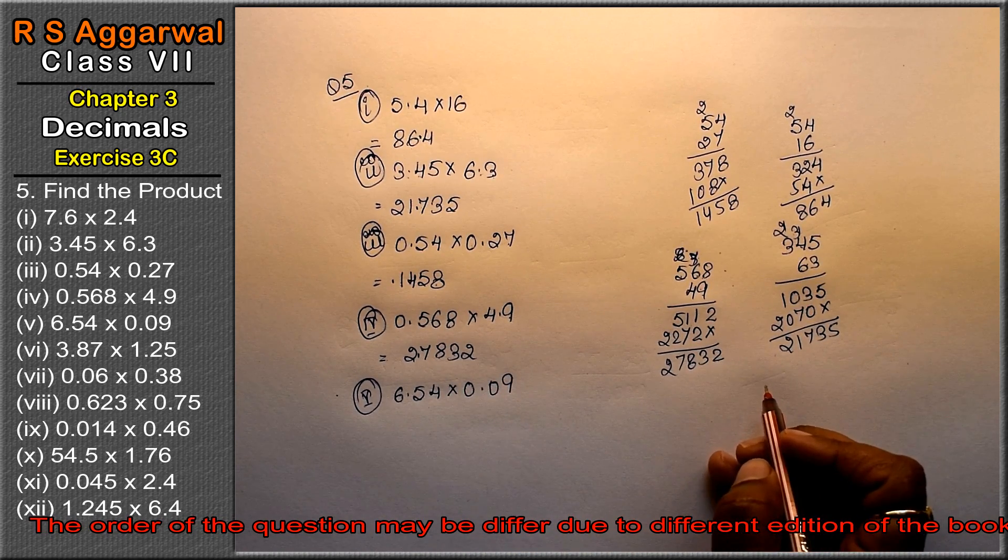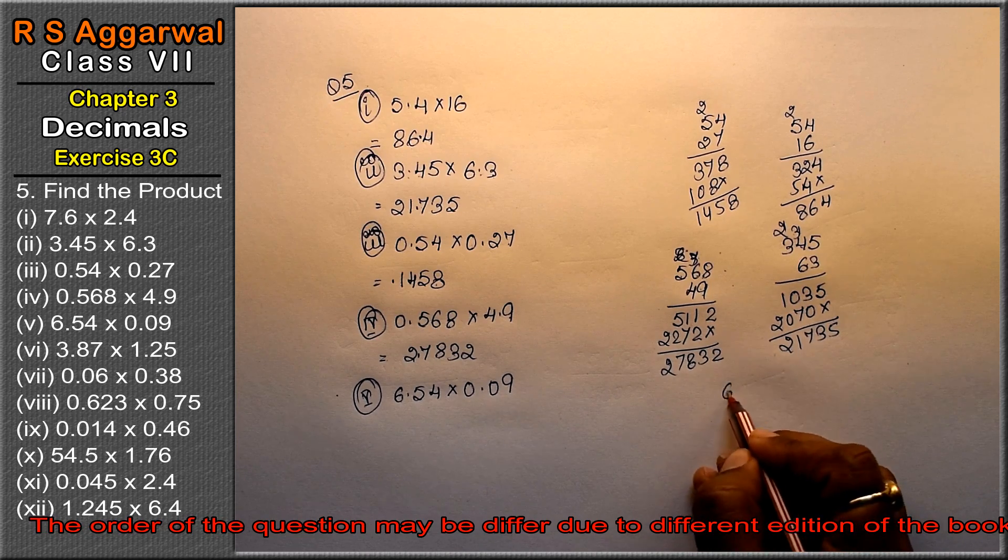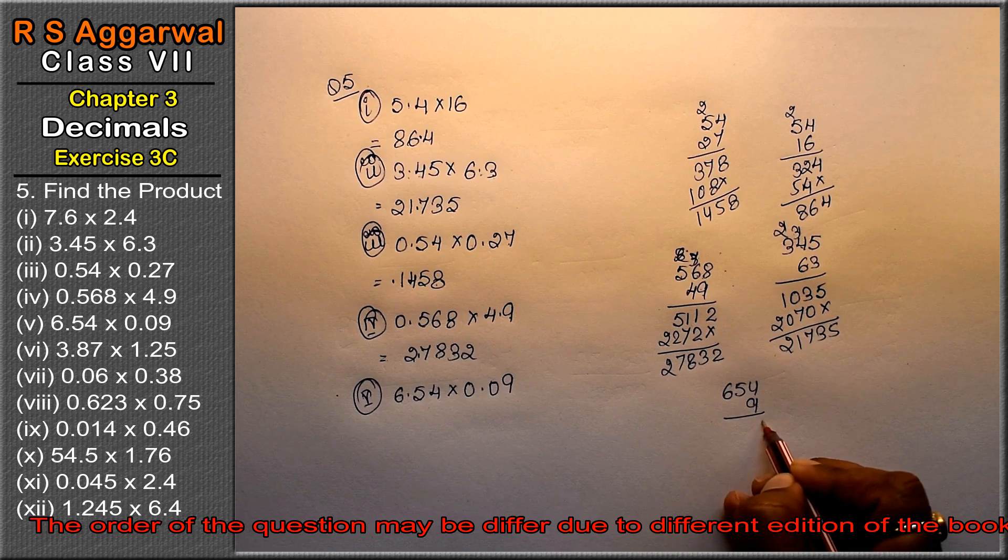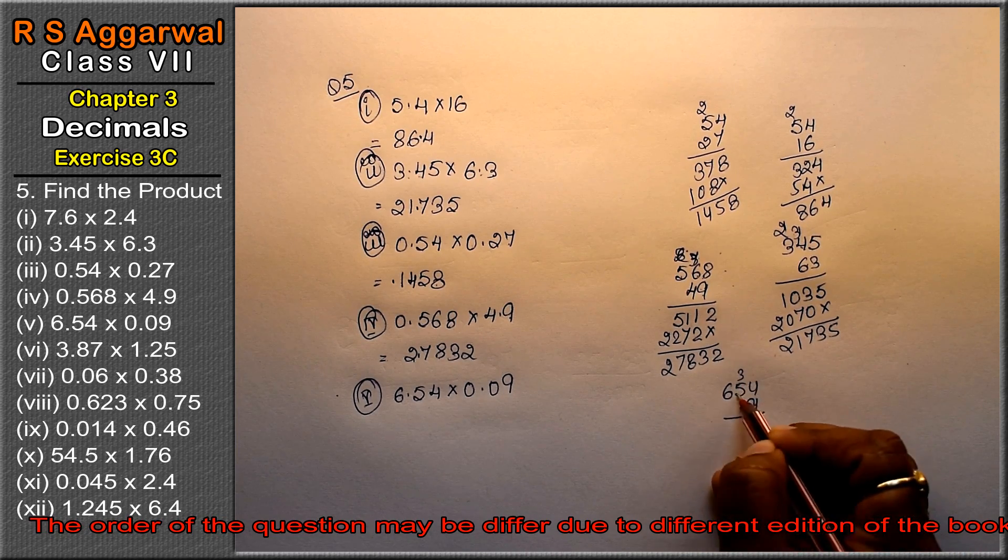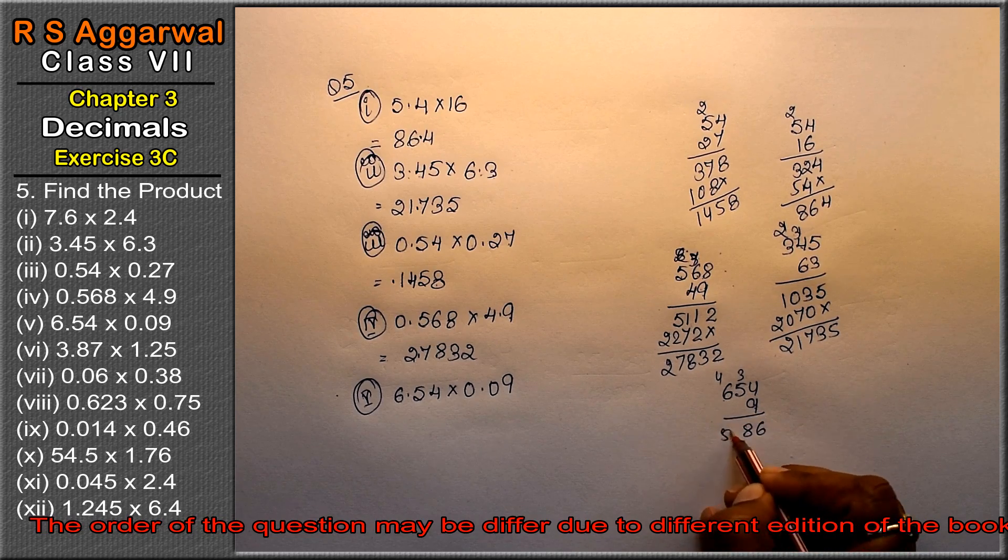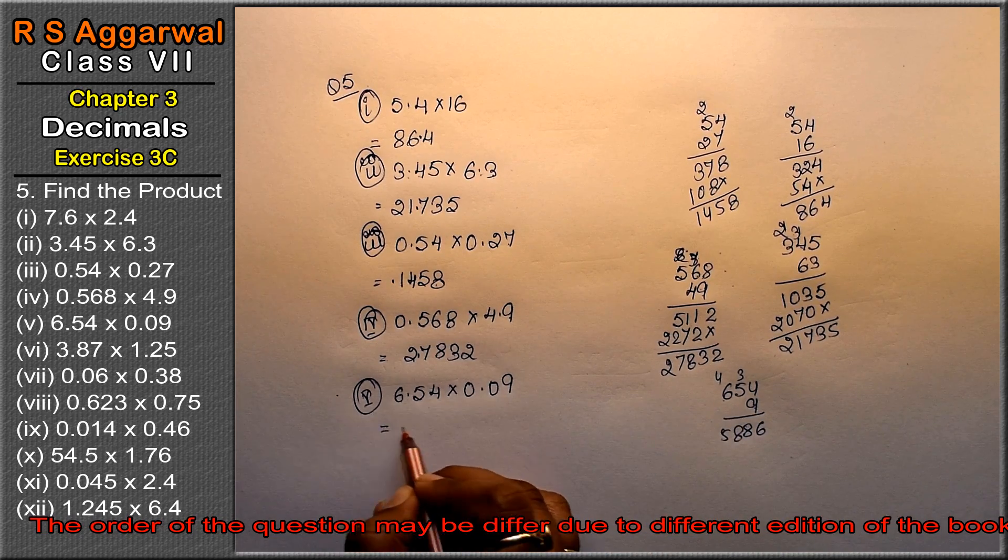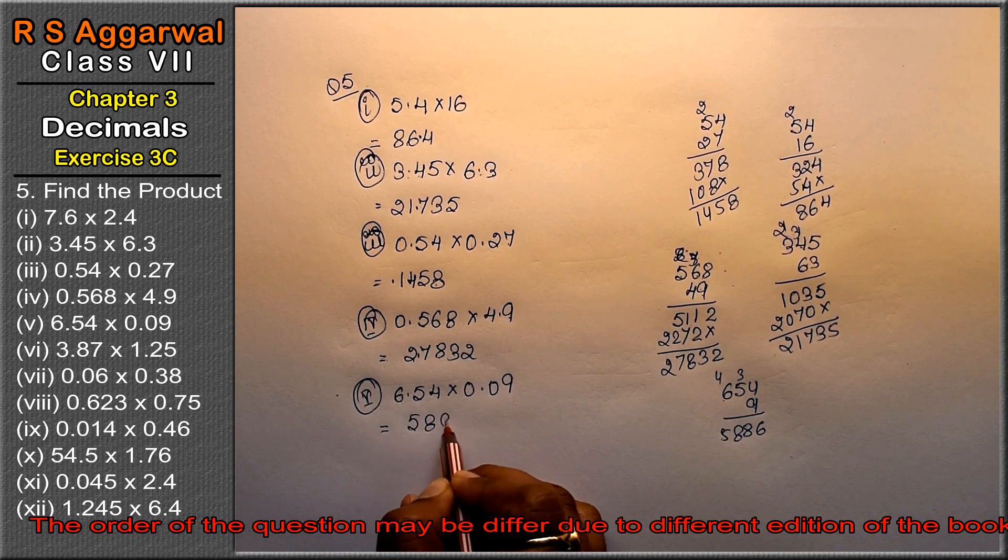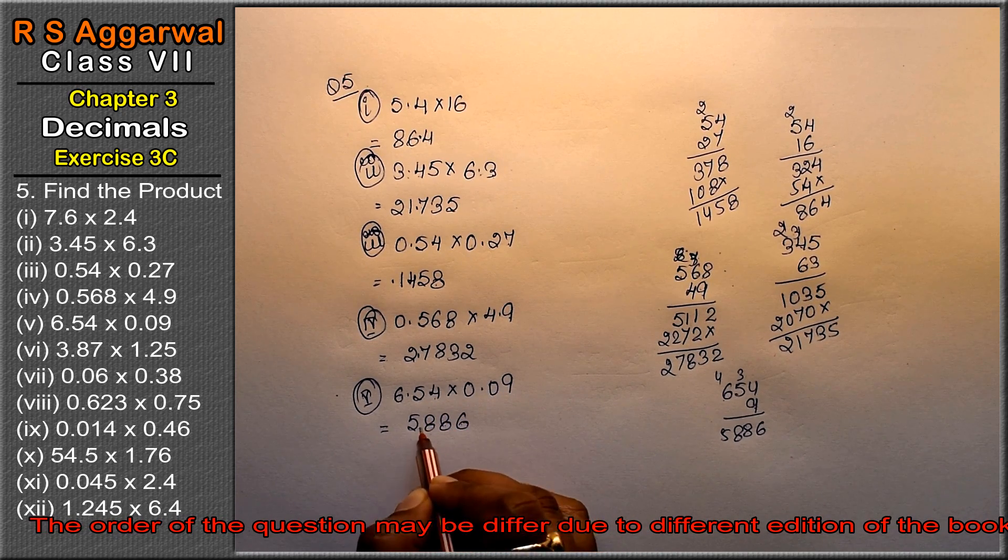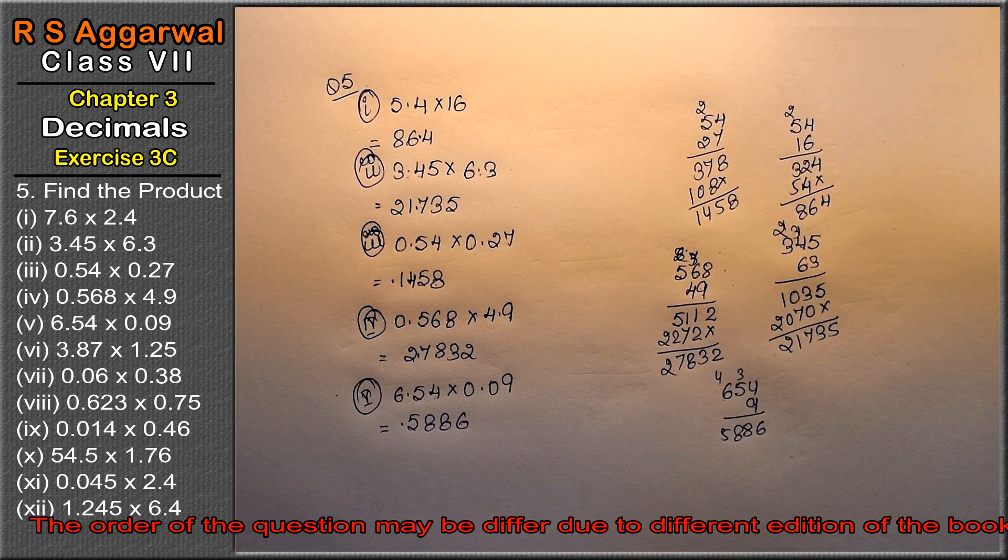Let's do fifth part: 6.54 into 0.09. Multiply 654 and 9. 9 times 4 is 36, carry 3. 9 times 5 is 45, 46, 47, 48. 9 times 6 is 54, 58. This gives 5886. Point: 2 decimal places plus 2 is 4 total, so 1, 2, 3, 4 ke baad point. The answer is 0.5886.